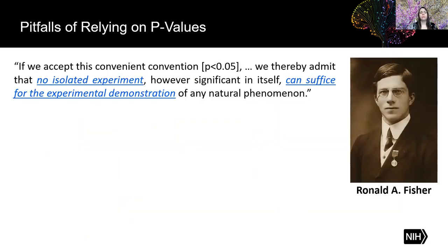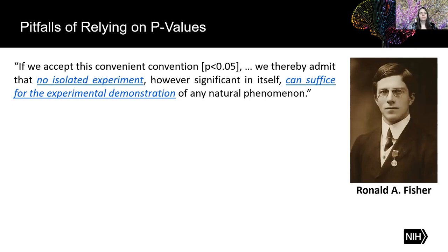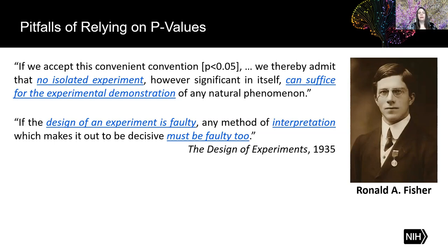Using null hypothesis significance testing and p-values can be flawed. P-values were never meant to prove or disprove hypotheses or indicate the magnitude or importance of a result — they simply measure the compatibility with a model. Ronald Fisher himself said in 1935 that if we accept the convention that p less than 0.05 is statistically significant, we thereby admit that no isolated experiment, however significant in itself, can suffice for the experimental demonstration of any natural phenomenon. In other words, a single p-value from a single experiment tells you very little. If the design of an experiment is faulty, any method of interpretation which makes it out to be decisive must be faulty too.